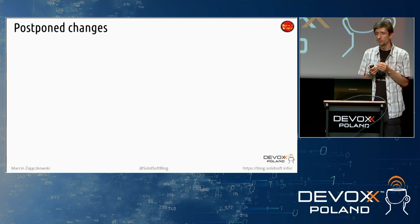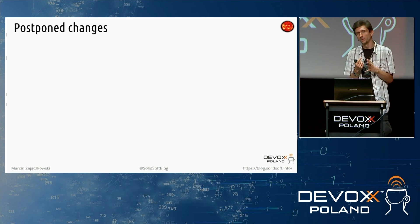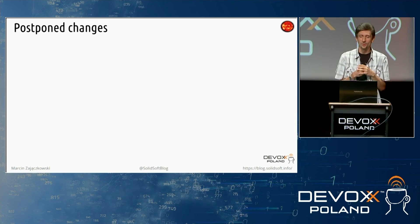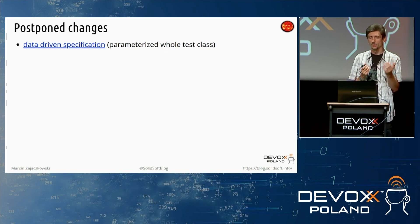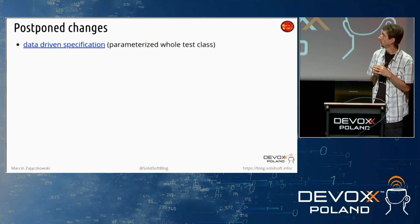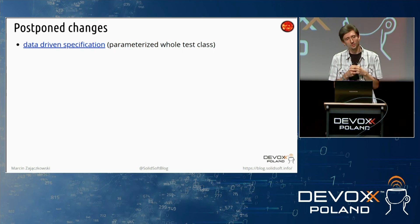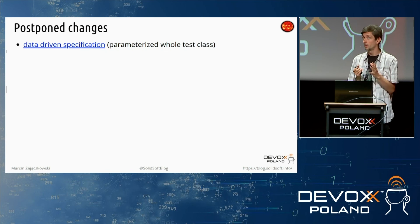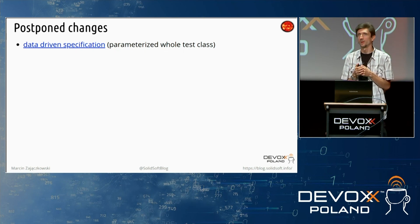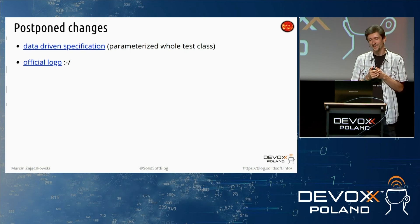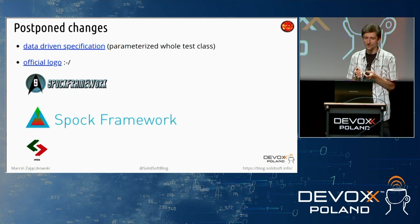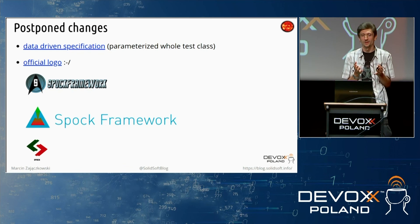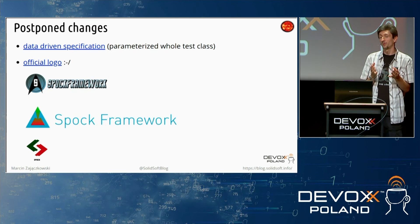I presented you a subset of new features and enhancements. However, there are some elements which were postponed to not delay the Spock 2 final release. One of these features is data-driven specification — a possibility to parameterize the whole test class, which is nice and in some cases very useful — but it will be available sometime in the future. In addition, there is an ongoing problem of selecting an official Spock logo. There are some proposals, and I hope to see the official Spock logo before Spock 3 is released.